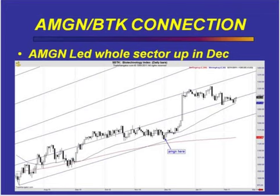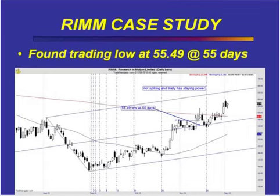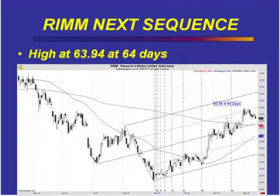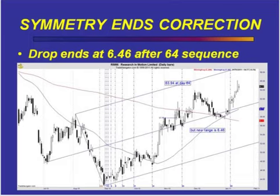This is a case study in RIM. The first low at congestion — the price point was $55.49 at 55 trading days. Then it rallied and peaked at $63.94 at 64 days. At the 64 sequence, it sold off to the midline, and at that midline the drop ended. The range on the drop was $6.46, and it rallied again.